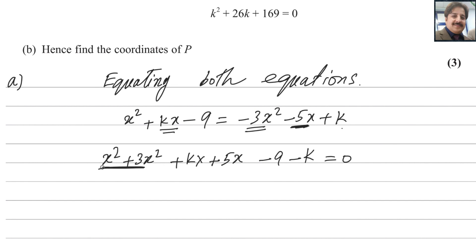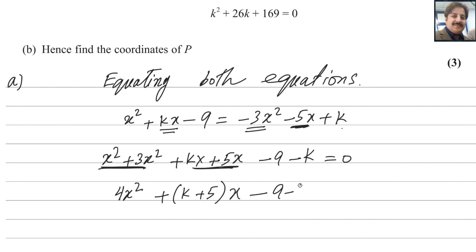Now solve the like terms together. x squared plus x squared gives 4x squared. x is common between the kx and 5x terms, so we can write k plus 5 times x. Keep the constant as is. This gives us the quadratic equation: 4x squared plus (k plus 5)x plus (minus 9 minus k) equals 0.